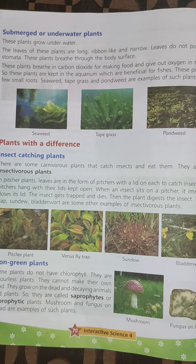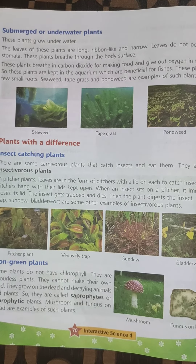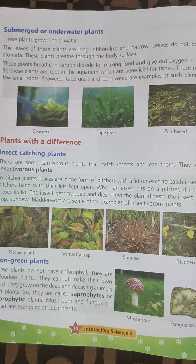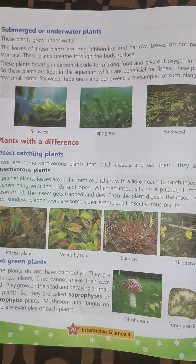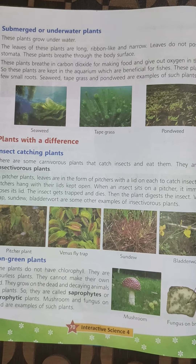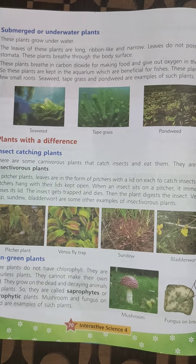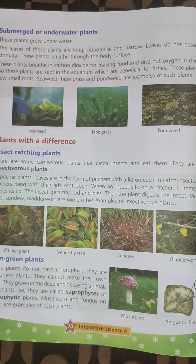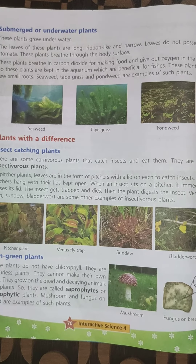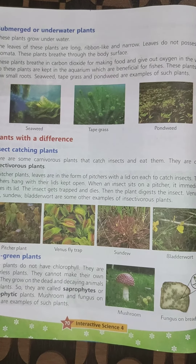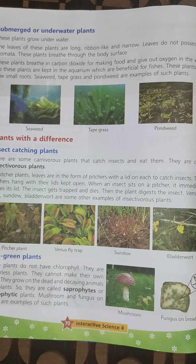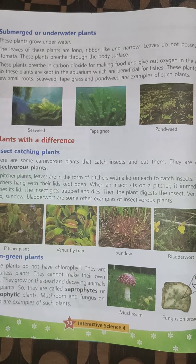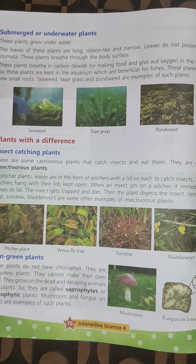These plants breathe in carbon dioxide for making food and give out oxygen in the water. So these plants are kept in aquariums, which are beneficial for fishes. These plants have few small roots. Seaweed, tape grass, and pondweed are examples of such plants.